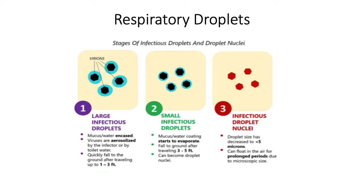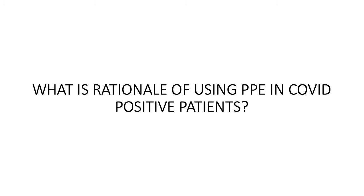Smaller infectious droplet nuclei less than five microns can travel through the air. We don't know definitively whether the virus travels through air, but we have to take precaution against it also. This is the basis for rational use of PPE in COVID positive patients.